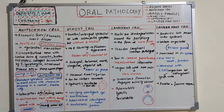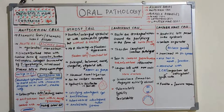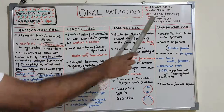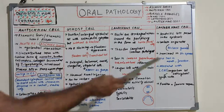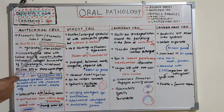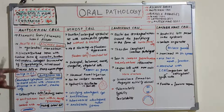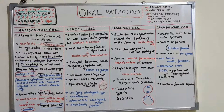Hello everyone, welcome back to a new session on oral pathology. Today we have very interesting cells which are peculiar for various diseases. Today's session covers a few cells: Anishkov cell, ghost cell, Langhans cells, Langerhans cells, Birbeck granules, and Ashoff's bodies. These are very peculiar characteristic cells present in certain diseases, and it is very confusing distinguishing Langhans and Langerhans cells.